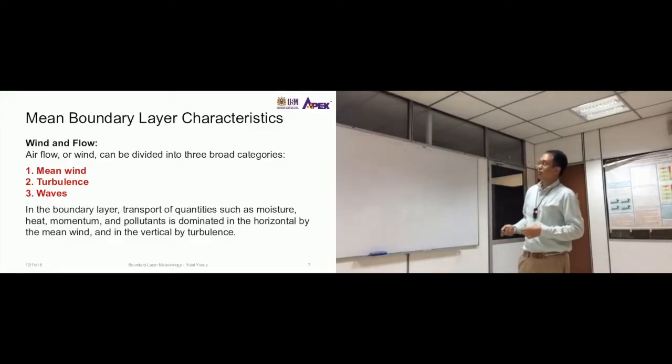So mean boundary layer characteristics, wind and flow. Again, just now we talked about the variation, the diagonal variation. Now we talk about these three things. Air flow or wind can be divided into three broad categories: mean wind, turbulence, and waves.